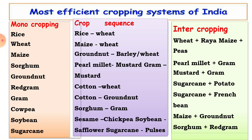Crop sequence means cultivation of different crops — two, three, or four crops — in a sequence in Kharif and summer season. Rice-wheat means growing rice in Kharif season and wheat in Rabi season. Other examples: maize-wheat, groundnut-barley or wheat, pearl millet-mustard or gram, cotton-wheat, cotton-groundnut, sorghum-gram, sesame-chickpea, soybean-safflower, and sugarcane-pulses.